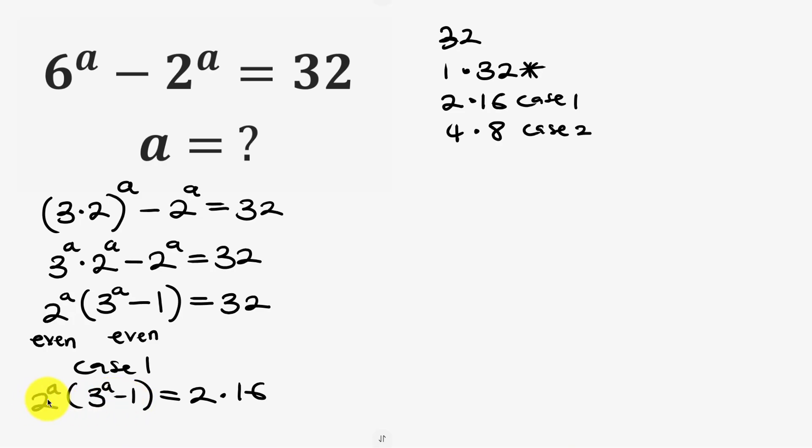So that means we'll use the smaller factor which is 2 to power a and equate it to the smaller factor of 32 which is 2. Then take the bigger factor 3 to power a minus 1 and equate it to the bigger factor of 32 which is 16. Now 2 is same as 2 to power 1. Notice that the bases are the same. So since the bases are the same we equate the powers. So a is equal to 1.